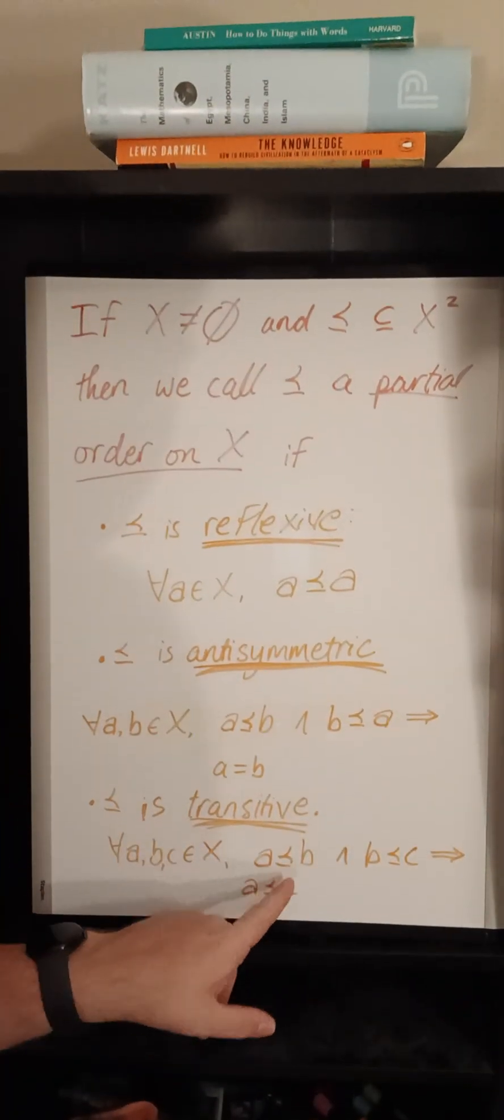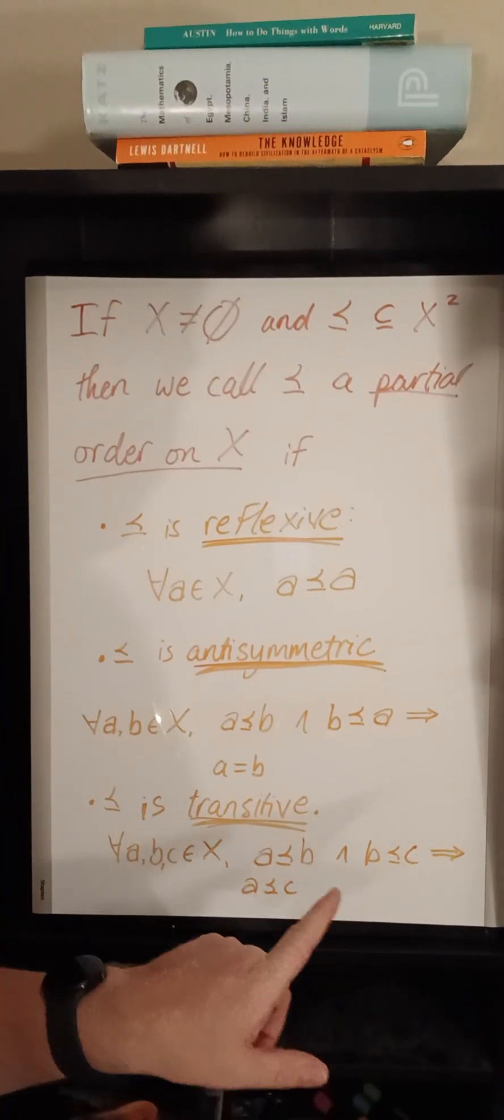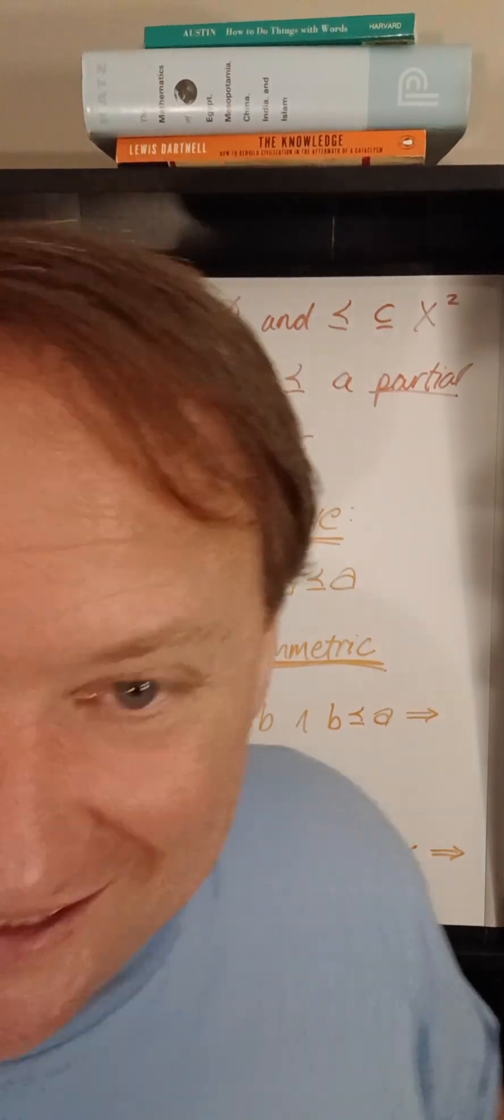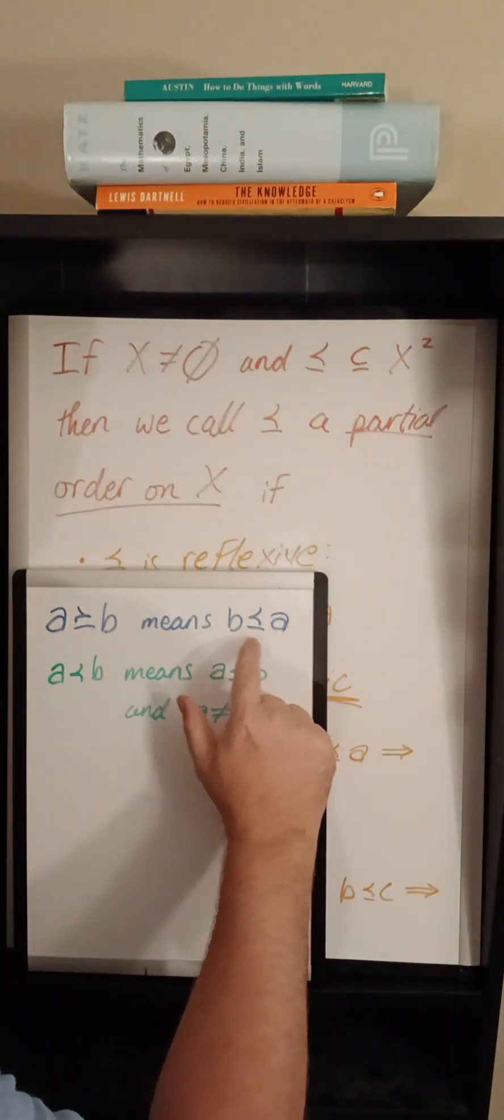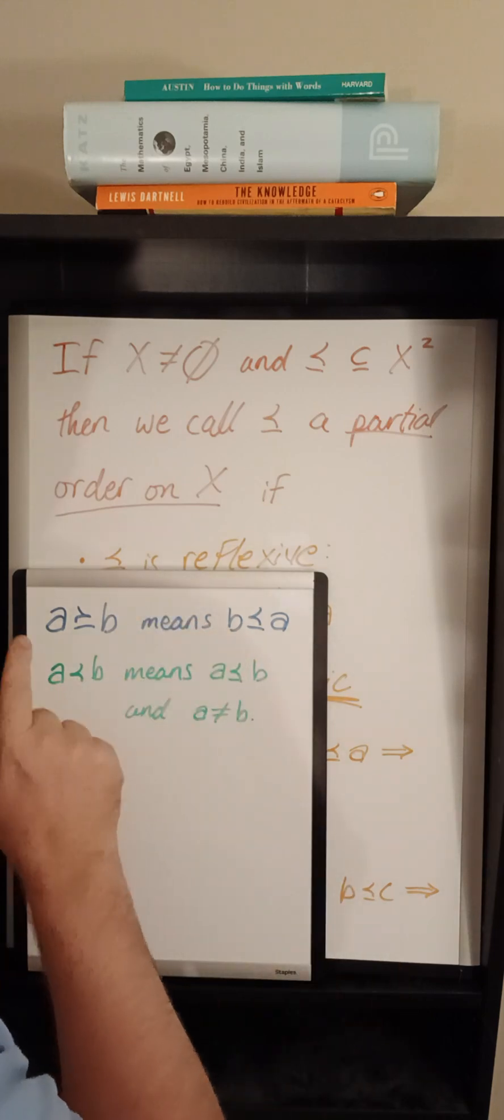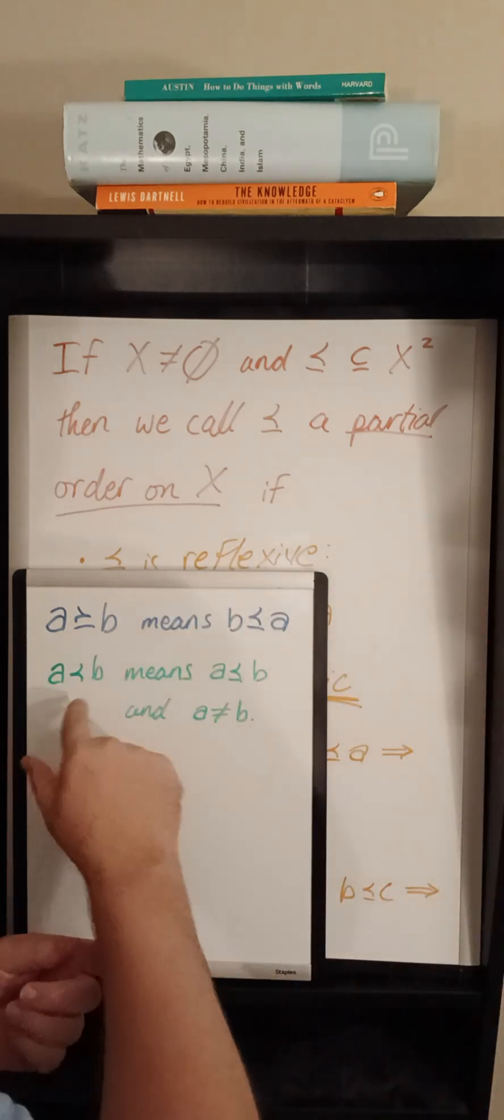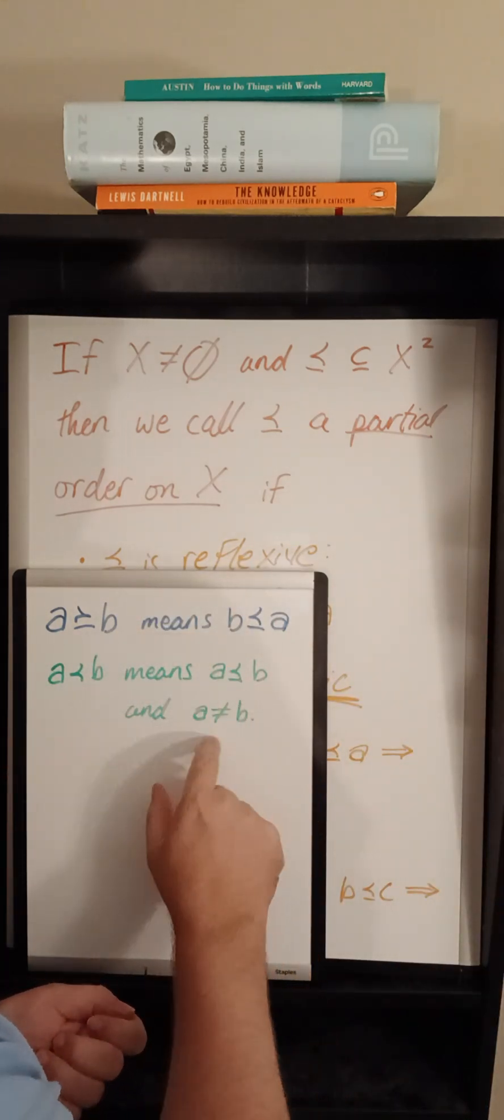Finally, it must be transitive, meaning that if A precedes B and B precedes C, then A precedes C. And as some syntactic sugar, A succeeds B means B precedes A, and A strictly precedes B means that A precedes B and they're not equal.